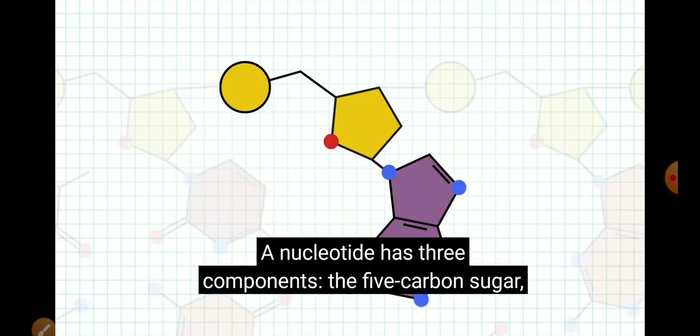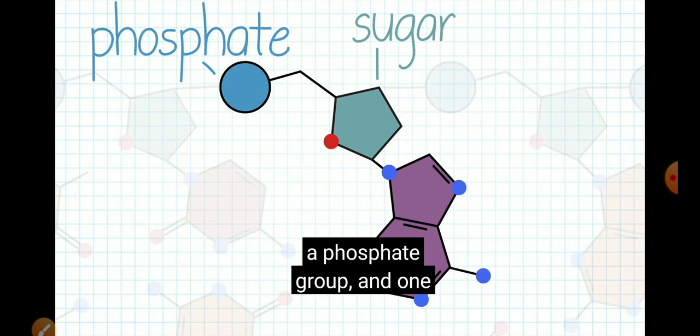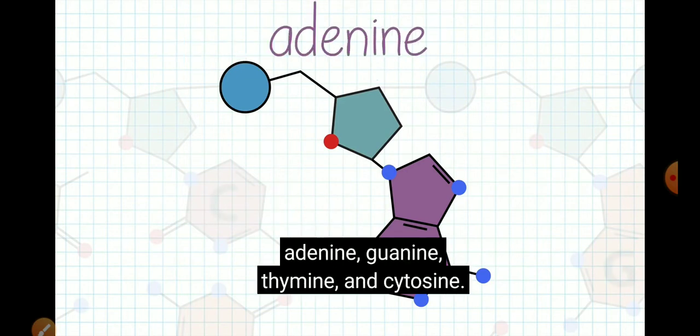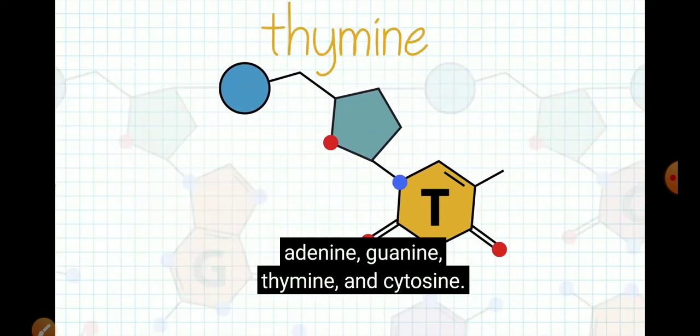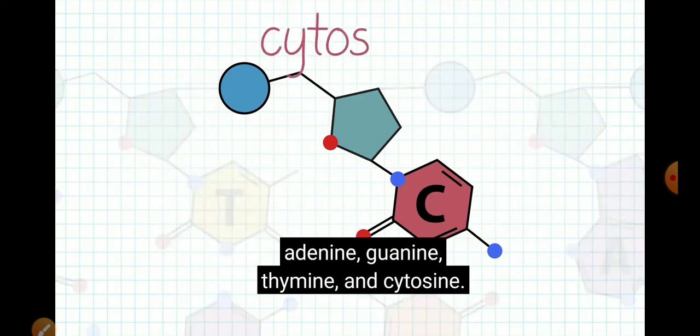A nucleotide has three components: the 5-carbon sugar, a phosphate group, and one of four possible nitrogenous bases—adenine, guanine, thymine, and cytosine.